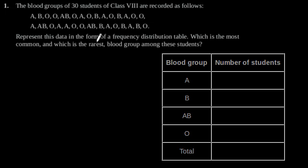Represent this data in the form of a frequency distribution table. Which is the most common and which is the rarest blood group among these students? Now, considering the recorded data, we can observe the following: